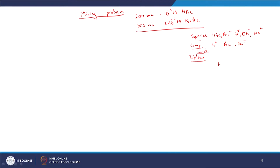For the tableau, the components are H⁺, Ac⁻, and Na⁺. We can skip Na⁺ from the tableau because no other species beyond Na⁺ itself contains sodium, so it plays no further role in the system.